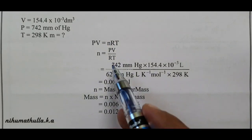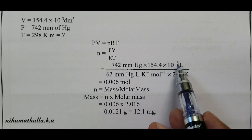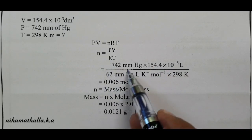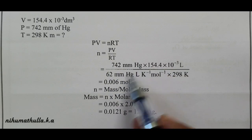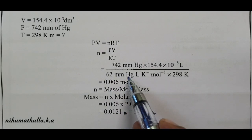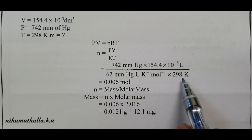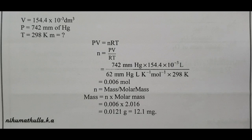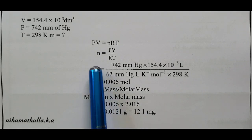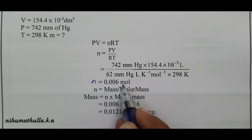Pressure 742, volume 154.4 into 10 power minus 3. R value is 62 millimeter, liter, Kelvin power minus 1, mol power minus 1. Temperature is 298 Kelvin. Solving, the number of moles is equal to 0.006 moles.